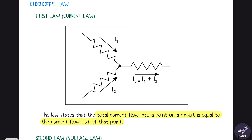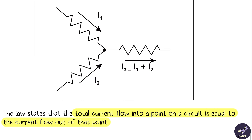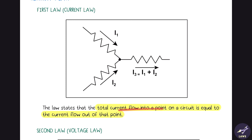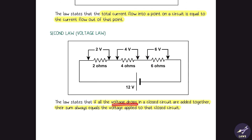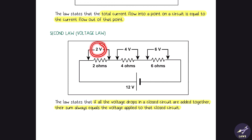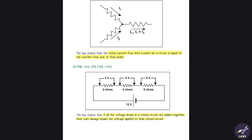Kirchhoff's first law is the current law: the total current flowing toward a point is equal to the current flowing out of that point. Kirchhoff's second law is the voltage law: if the voltage drops in a closed circuit are added together, their sum always equals the voltage applied to that closed circuit. For example, if the voltage applied is 12 volts, the sum of all voltage drops also equals 12 volts.